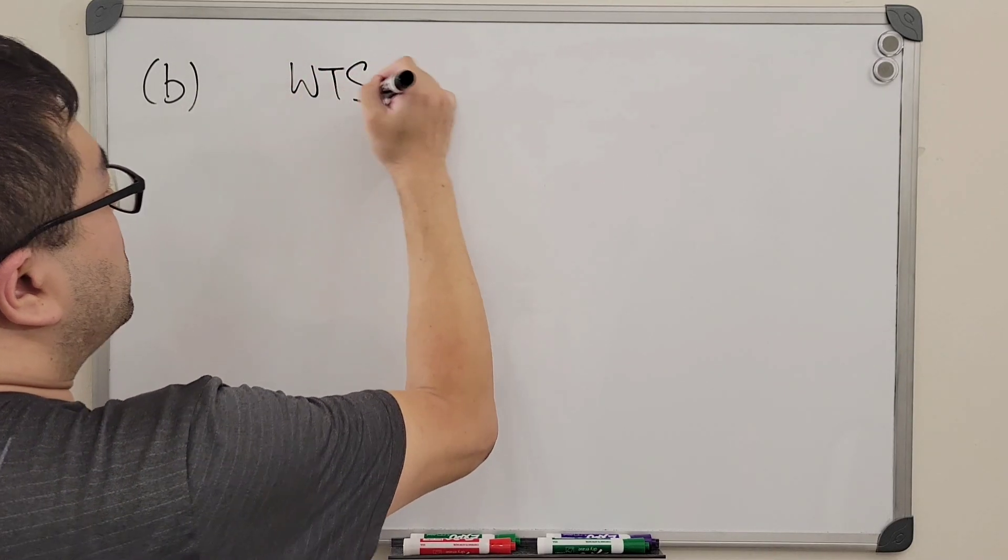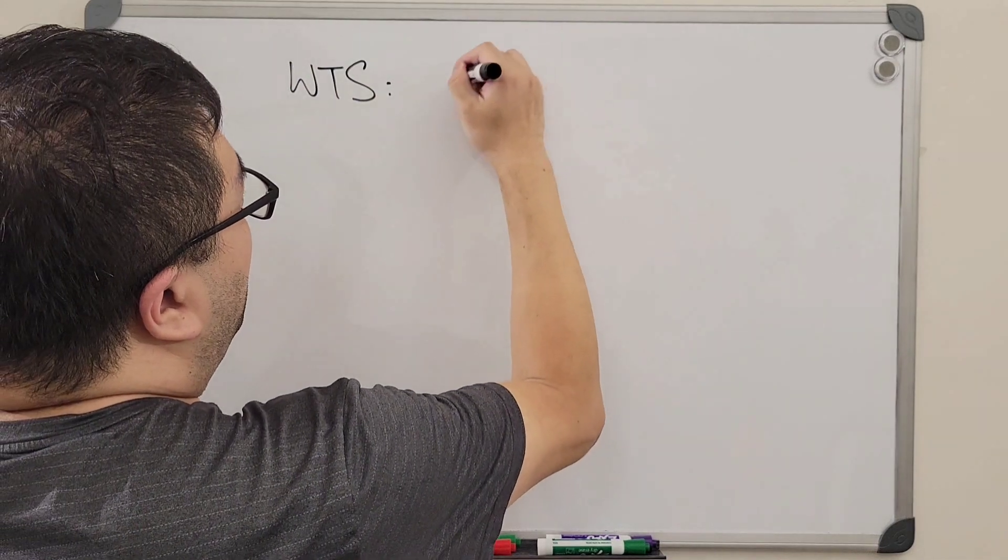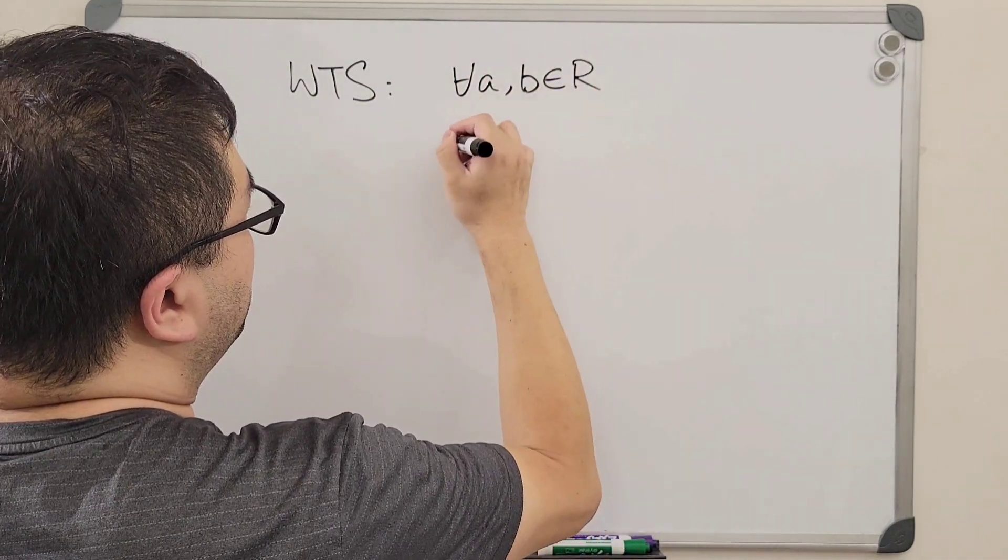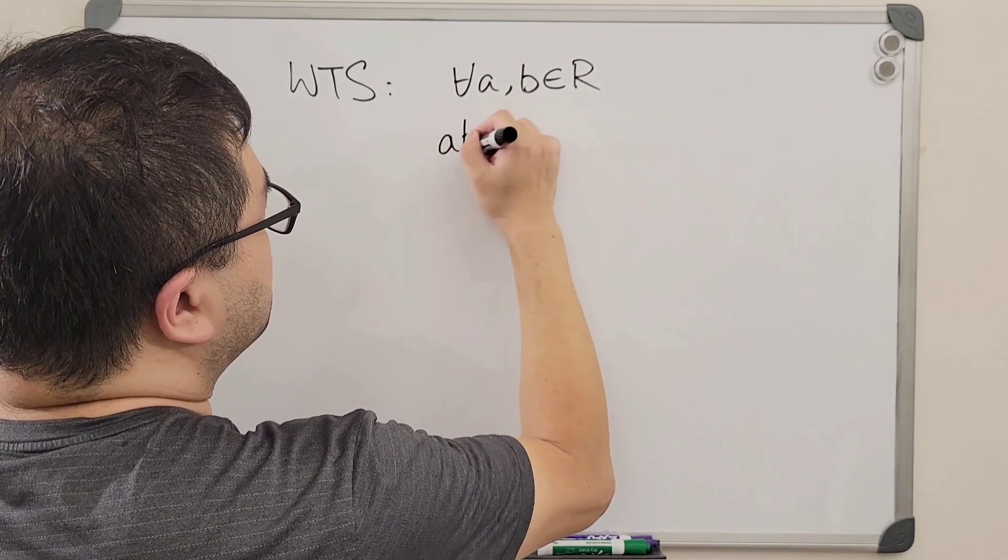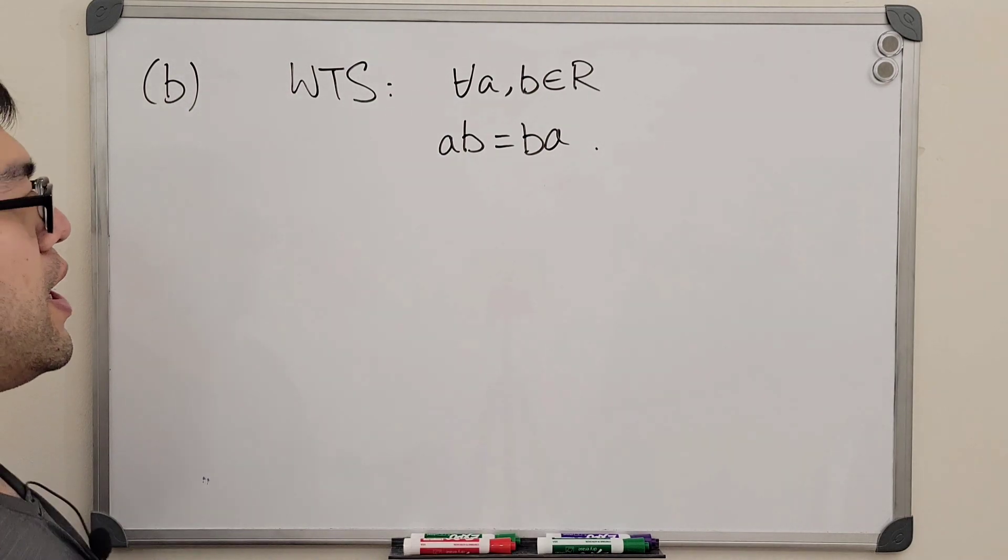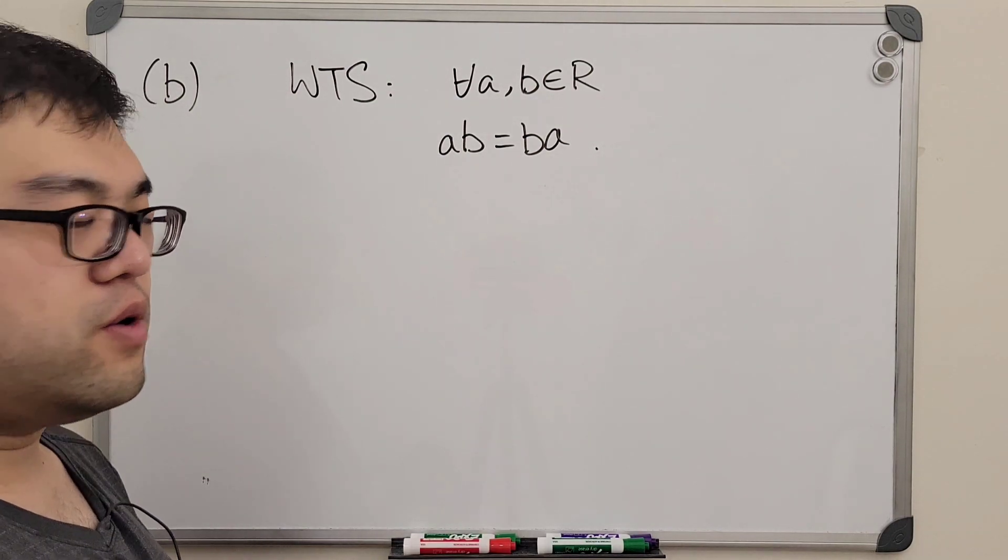We will actually want to show that for all elements a and b in the ring, we get ab is equal to ba. So this is what we need to prove. How can we do it?